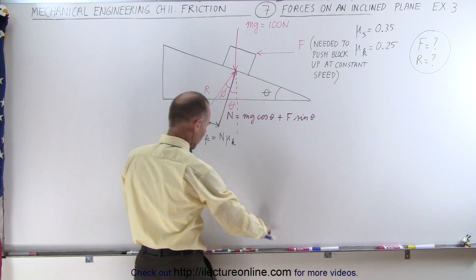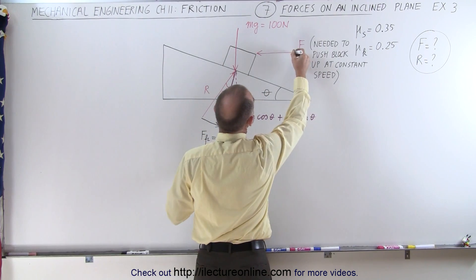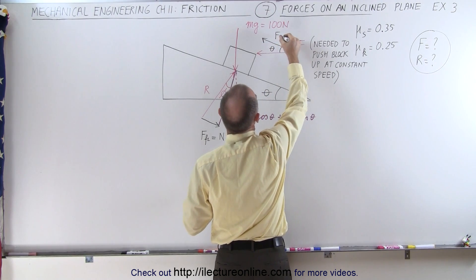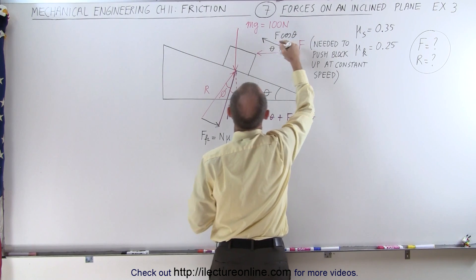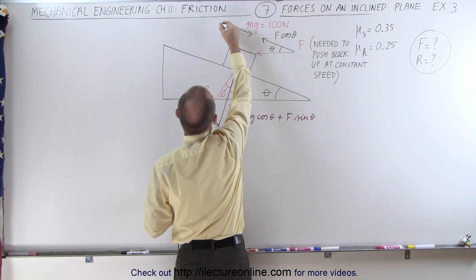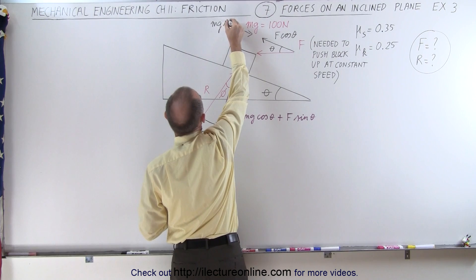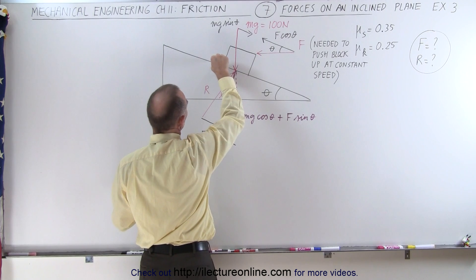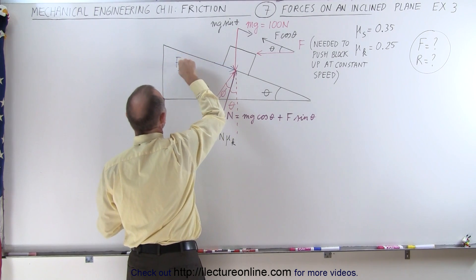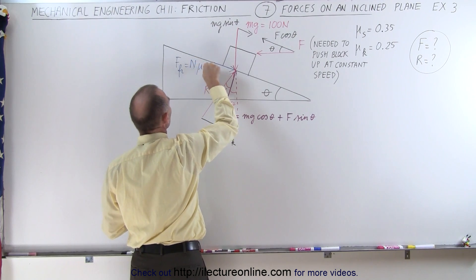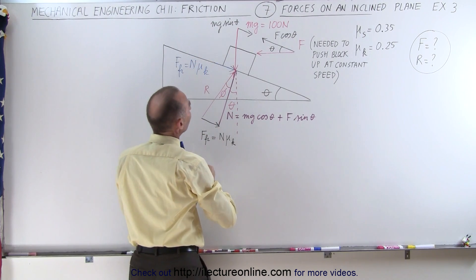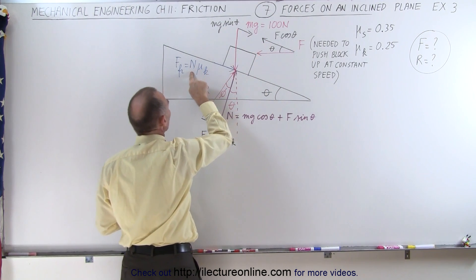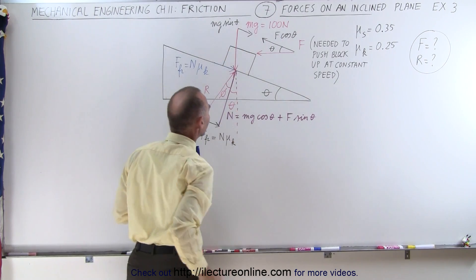The component of the force in the horizontal direction — that would be F times the cosine of theta — is sufficient to overcome the mg sine theta component of the weight, and the friction force. The friction force is equal to the normal force times mu sub k, so F cosine theta equals mg sine theta plus the kinetic friction force caused by the weight of the block pushing down on the surface.